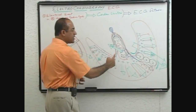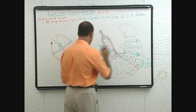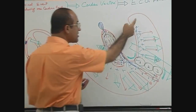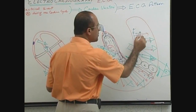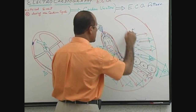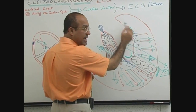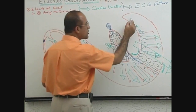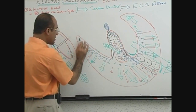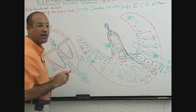Once the septum and major part of the ventricles are depolarized, the depolarization wave eventually reaches the basal area. These are the basal parts of the ventricles and will be the last to be depolarized. The depolarizing current here is moving from down to up and rightward, so small vectors are produced by depolarization of the basal part moving upward and rightward.